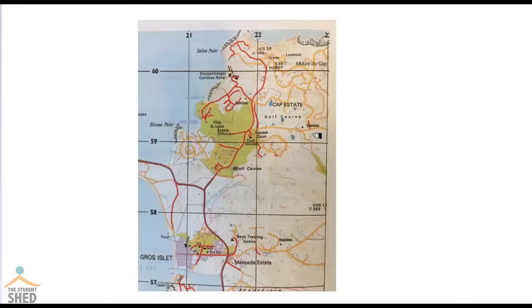Let us look at an actual map now to determine the six-figure grid reference. Let us look at this area right here called the stables and see if we can determine the six-figure grid reference for this point right there in the middle. To do so, we first find the four-figure grid reference.